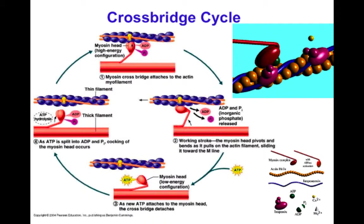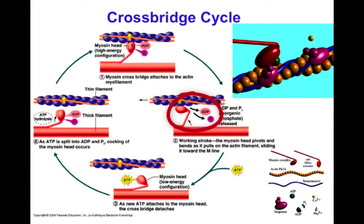Once the S1 head — with ADP and inorganic phosphate still attached — binds actin, its affinity for the nucleotides changes and they are released sequentially. That release changes the energetic state of the crossbridge, causing a conformational change shown by the tilting of the head. This is the power stroke of the crossbridge cycle, and it is how muscle shortens: the power stroke pulls the thick filament relative to the thin filament so they slide with respect to each other and the muscle shortens.